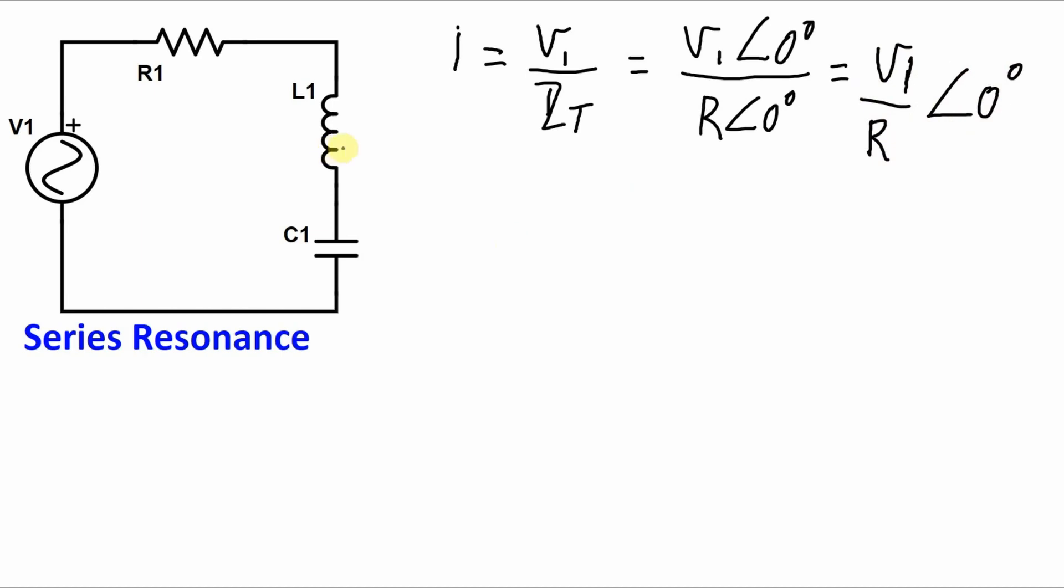Now what about the voltages across each one of these components? Well, the voltage across the resistor, for all of these, is just going to be current times impedance of the component. So this will be I with a phase angle of 0 degrees times that resistance, which also has a phase angle of 0 degrees. So we get a magnitude of IR with a phase angle of 0 degrees.